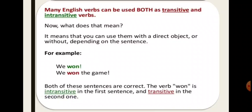Many English verbs can be used both as transitive and intransitive verbs. Now, what does that mean? It means that you can use them with a direct object or without, depending on the sentence.